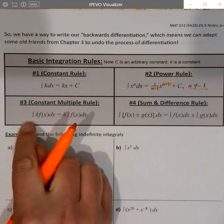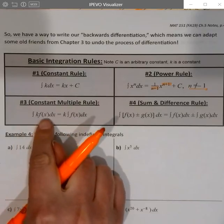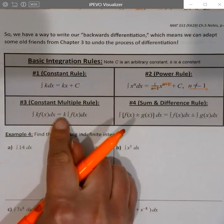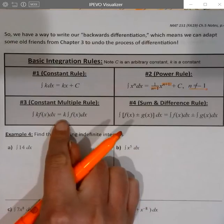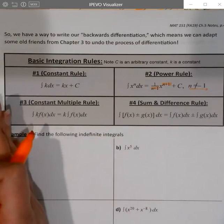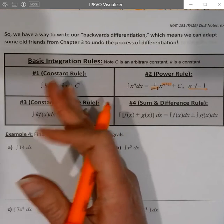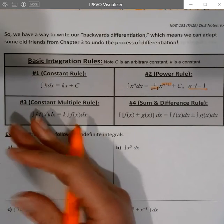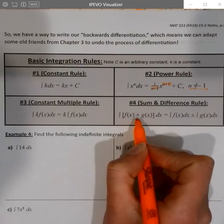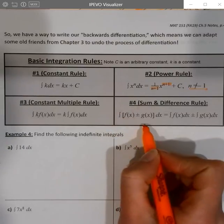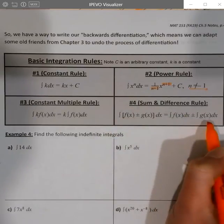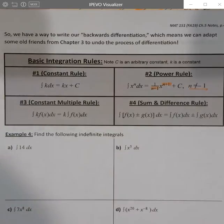Constant multiple rule, we had this for derivatives as well. If you have a constant times the function, you can just take the constant out of the integral, deal with the function, then multiply by it. So same thing we did for derivatives. Same thing, sum or difference. You can do the derivative of two pieces separately. You can also do the antiderivative of two pieces separately. And so that rule is similar to what we saw with derivatives.